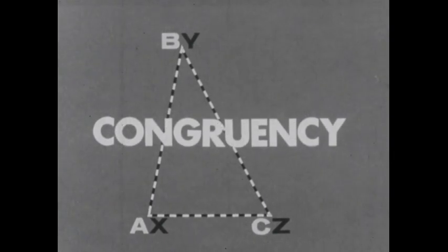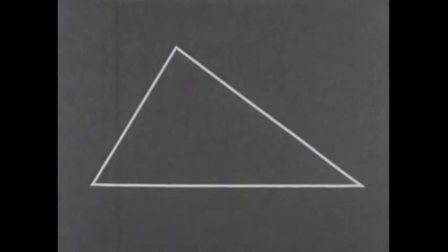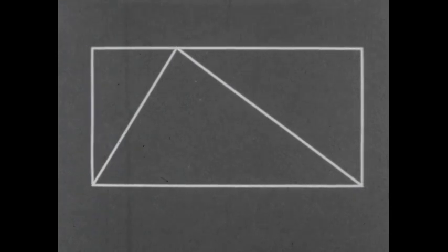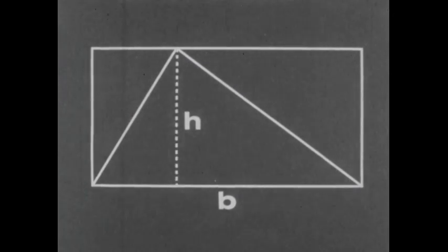Congruency will help us demonstrate how we derive this formula for the area of a triangle: area equals one half the base B times the height H. First, on the base of the triangle, we construct a rectangle. The rectangle and the triangle both have the same base B and height H.